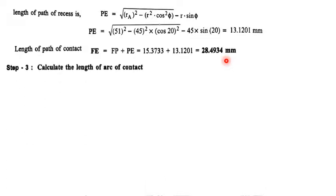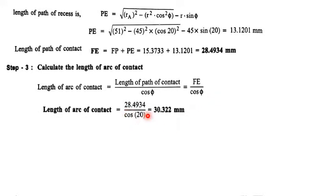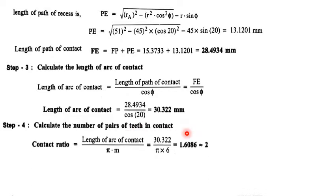Step 3: Length of arc of contact = path of contact / cos φ = 28.49 / cos 20° = 30.32 mm. Contact ratio = length of arc of contact / circular pitch = 30.32 / (π × 6) = 1.60, rounded up to 2. Therefore the number of pairs of teeth in contact is 2.